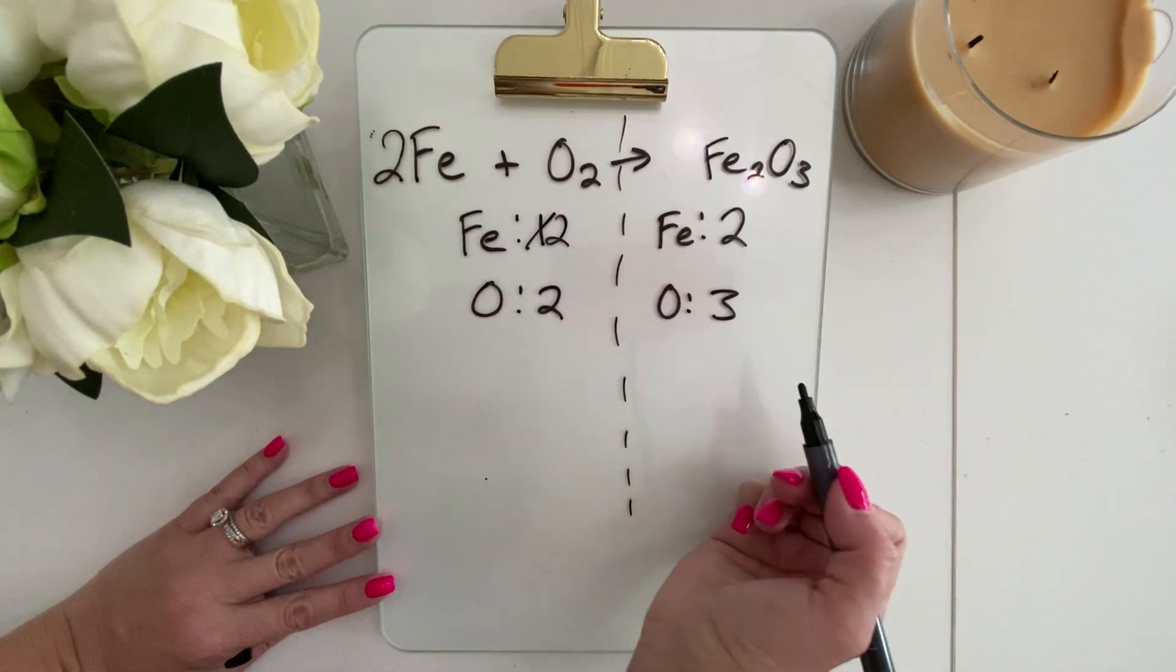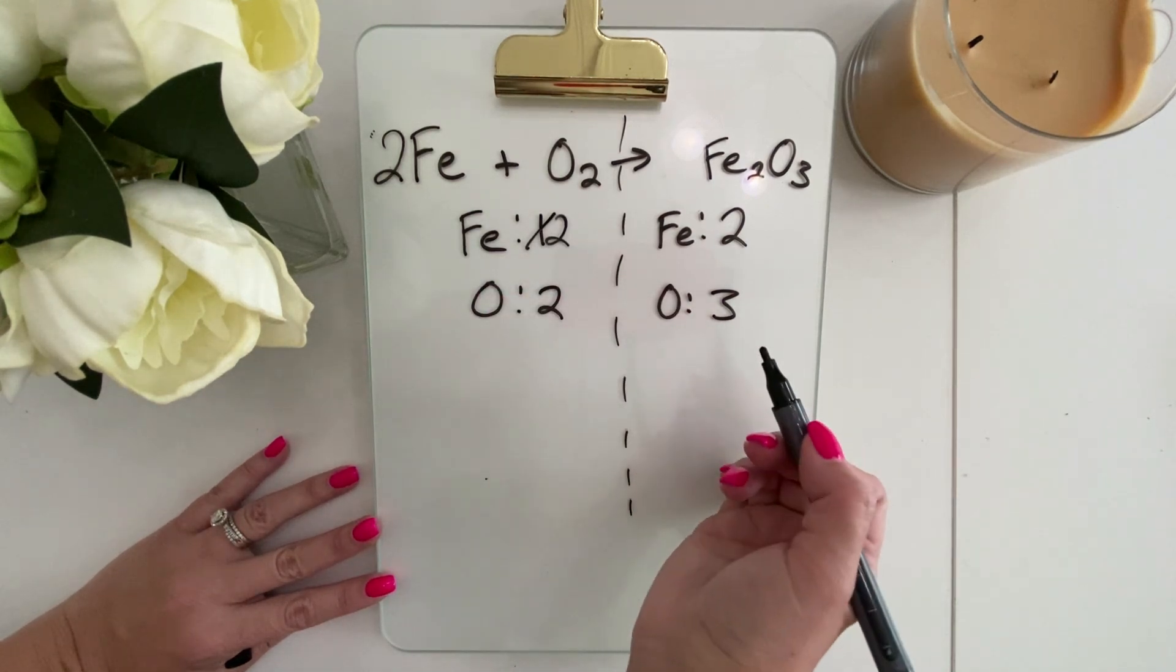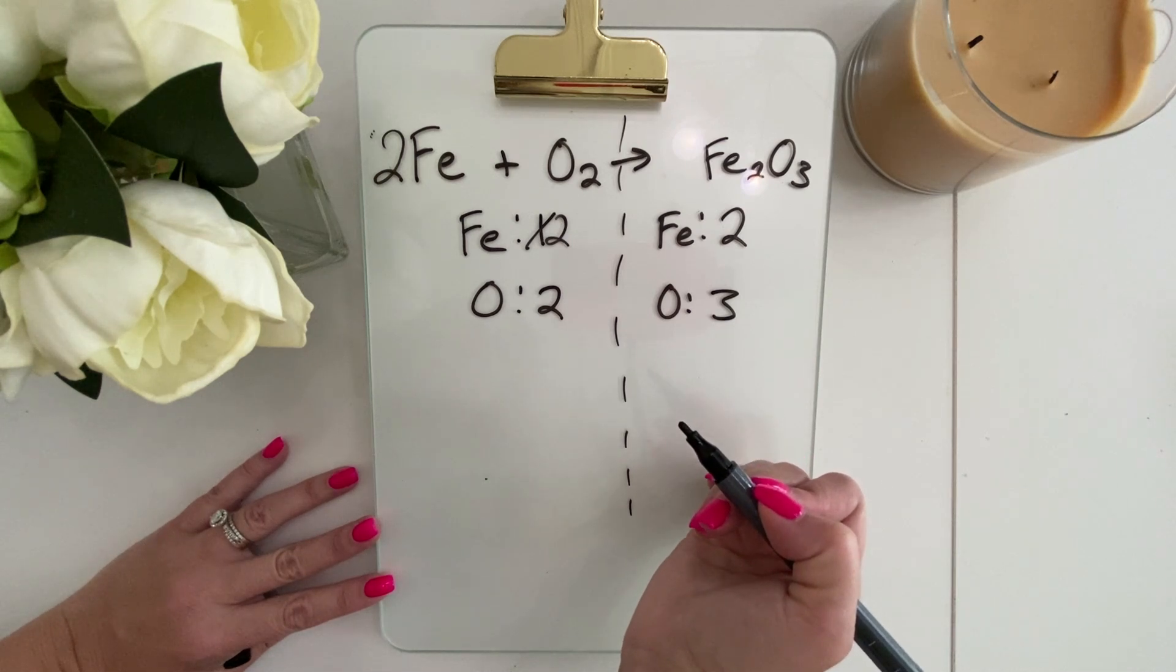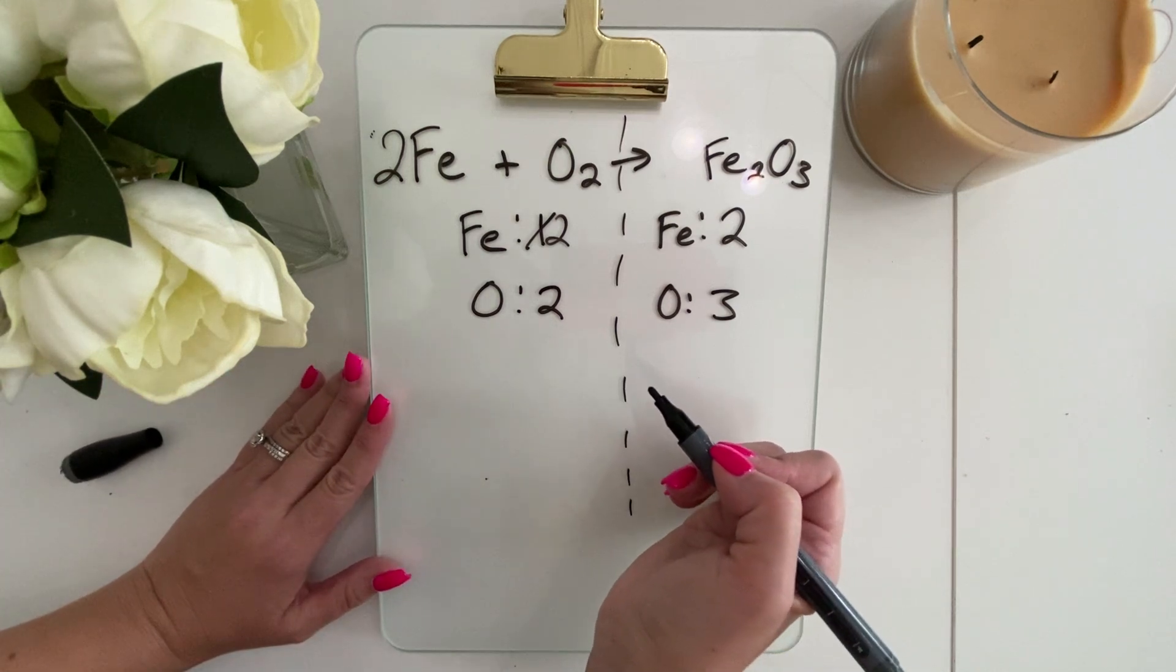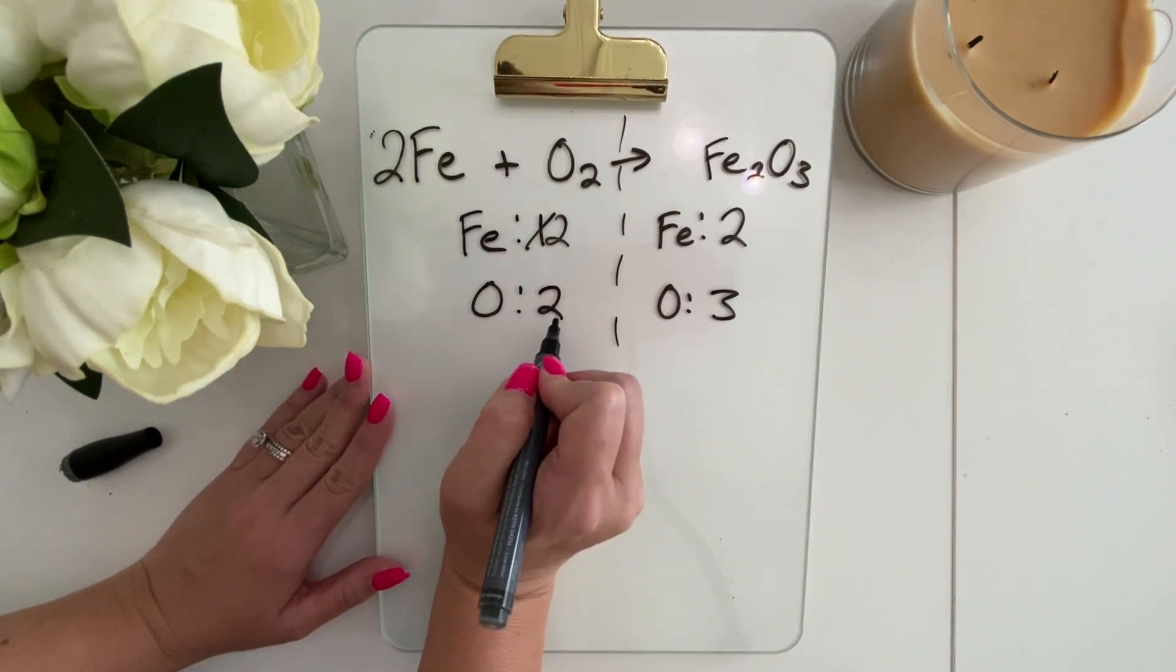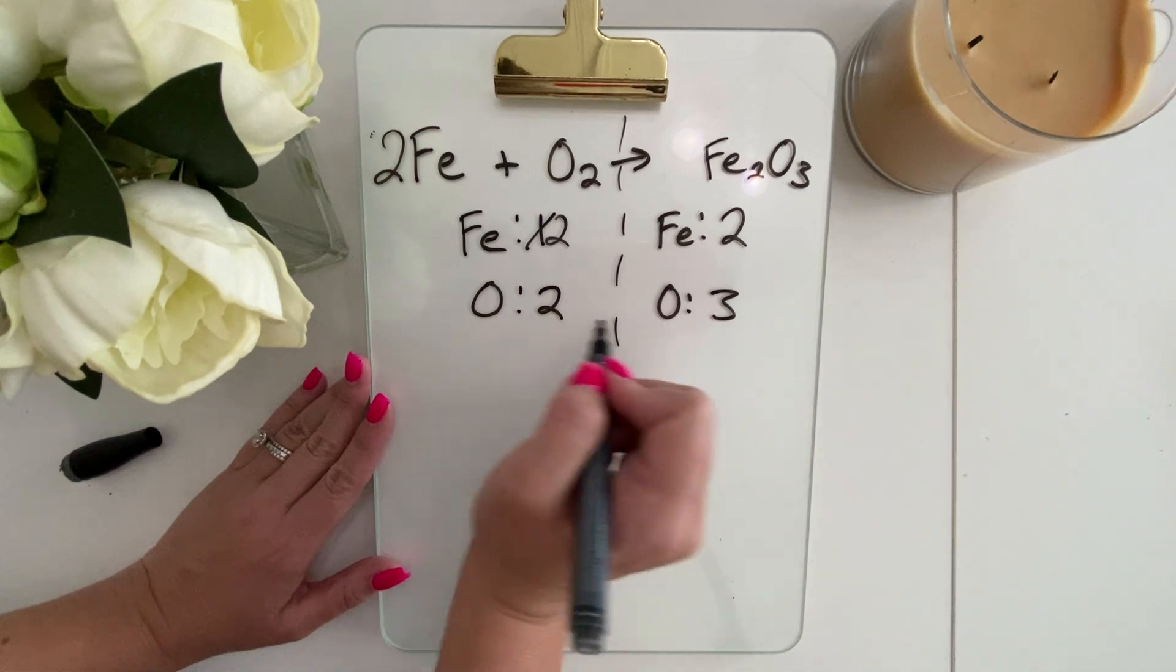So now we need to focus on our oxygen. You can see we have an even and an odd number. We need to stick with the lowest number coefficient possible in order to make this work out. So we're going to do two times three for both.